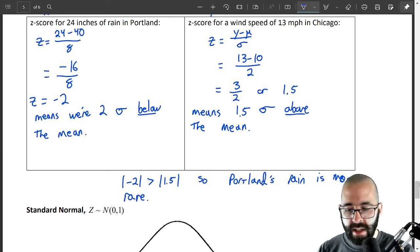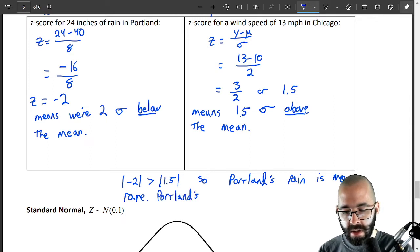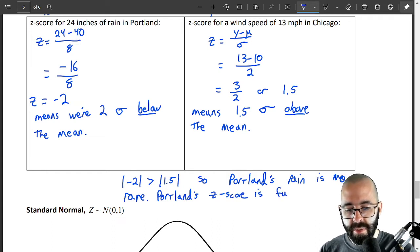Another way of answering this is Portland z-score is further from the mean